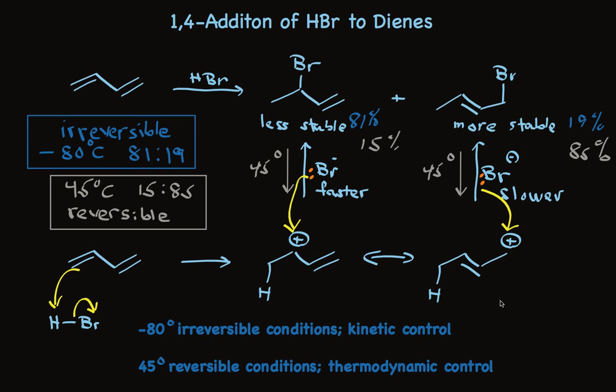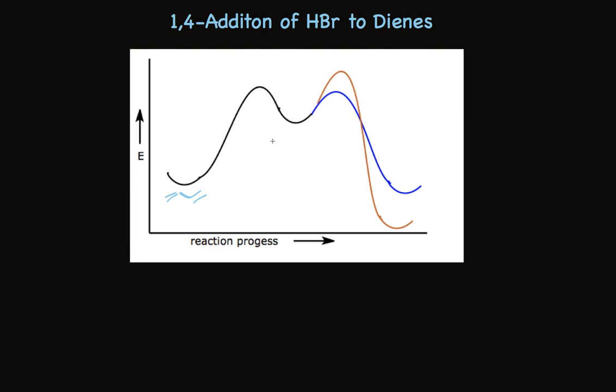This can be nicely summarized in an energy diagram. The butadiene is protonated to make an allylic carbocation. The activation energy to form the less stable 1,2 product is smaller, while the activation energy to form the more stable product is greater.